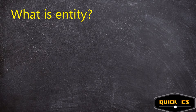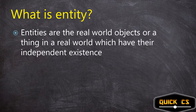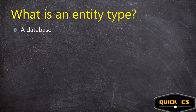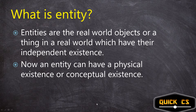What is an entity? Entities are real world objects or things in the real world which have their independent existence. That independent existence can be either physical or conceptual. For example, a student has a physical existence. Whereas a company on the internet may not have a physical office, but it has a conceptual existence. So an entity is a real world object with its own independent existence — either physical or conceptual.